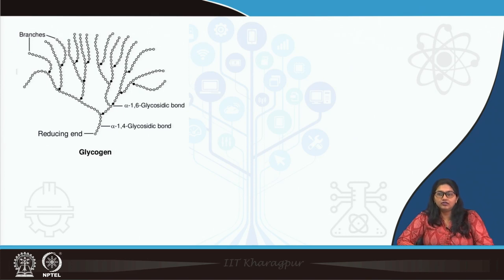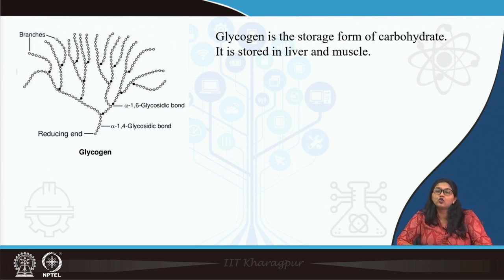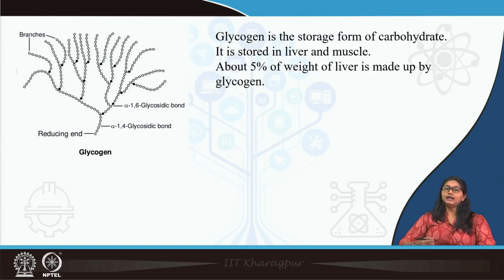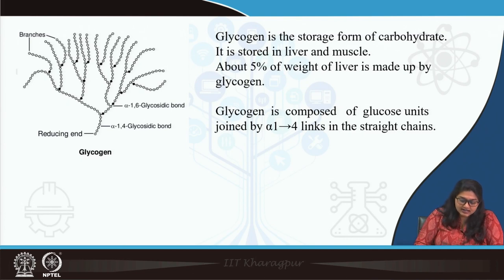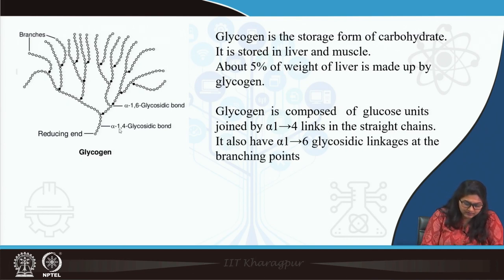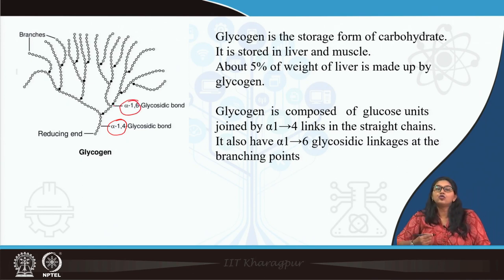This is a glycogen molecule. Glycogen, as you all know, is a storage form of carbohydrate and is basically stored in liver and muscle as a storage form of glucose. Multiple molecules of glucose actually help to form a glycogen molecule. In liver, about 5 percent of the liver weight is actually made up of glycogen. In the structure of glycogen, there is an alpha 1,4 glycosidic bond, and also there are branch points formed by alpha 1,6 glycosidic bond. So there are two types of glycosidic bond present in a glycogen molecule.